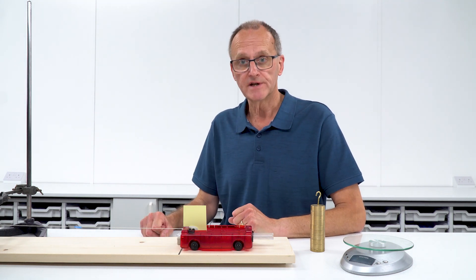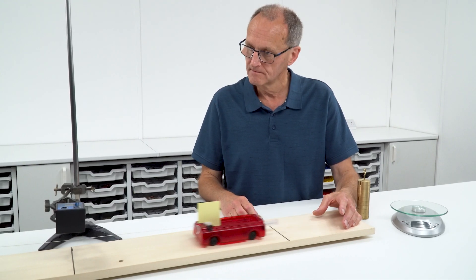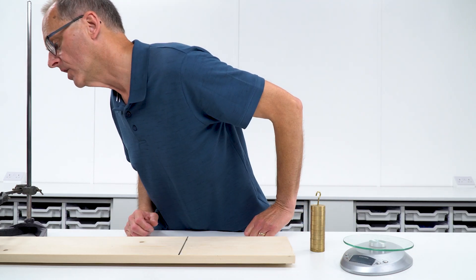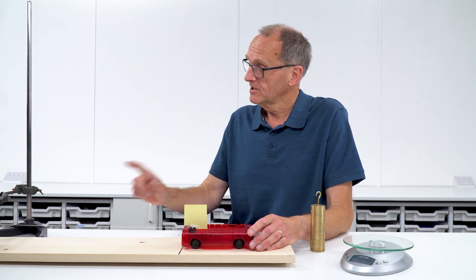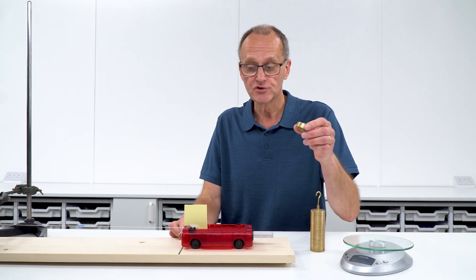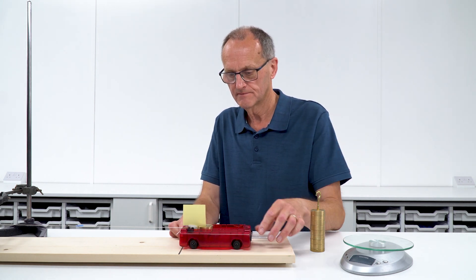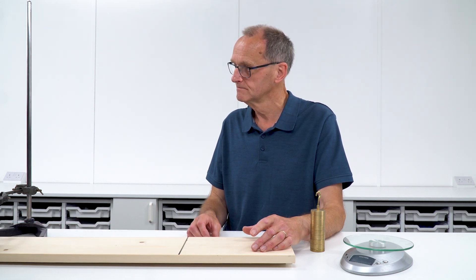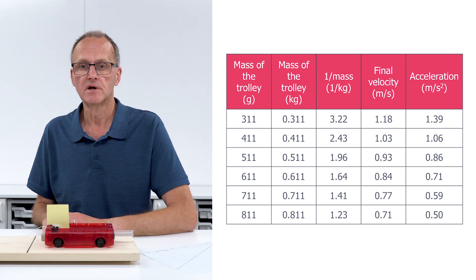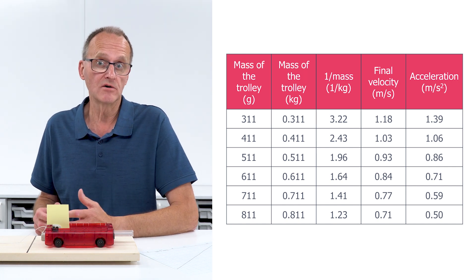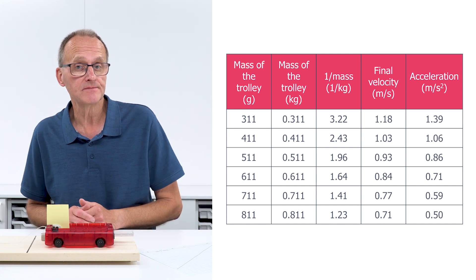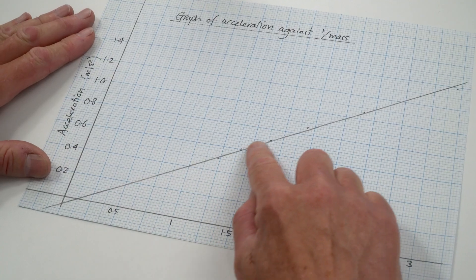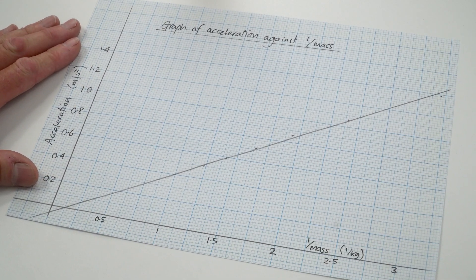Here we go with our first reading — a velocity of 1.18 metres per second. We then add 100 grams to the trolley and take the next reading, continuing through the full set. We've had to do a little more calculating this time: squaring the velocity for acceleration and also computing 1 divided by the mass. The results are in the table and plotted on the graph, and once again with experimental error we get a reasonable straight line close to the origin. You could encourage your class to take repeat readings and average them for even better results.